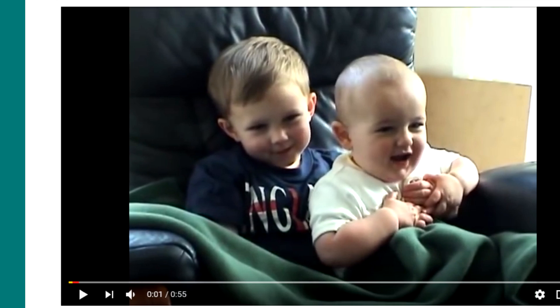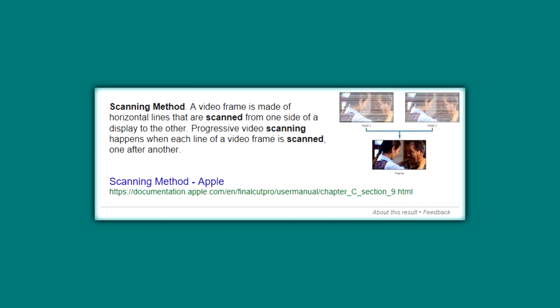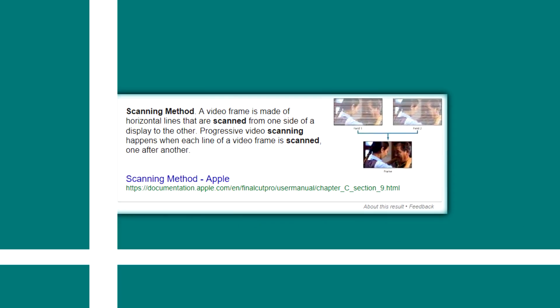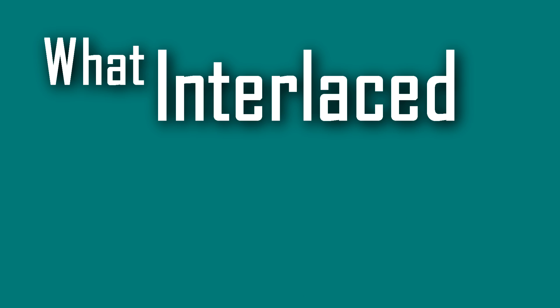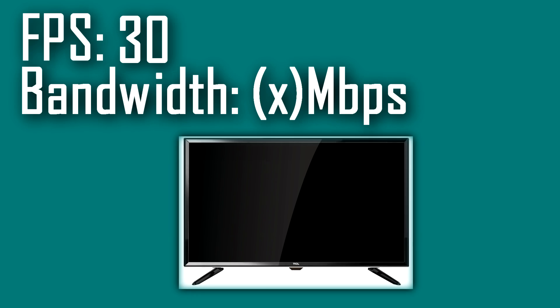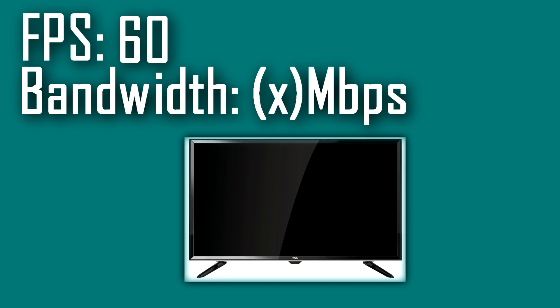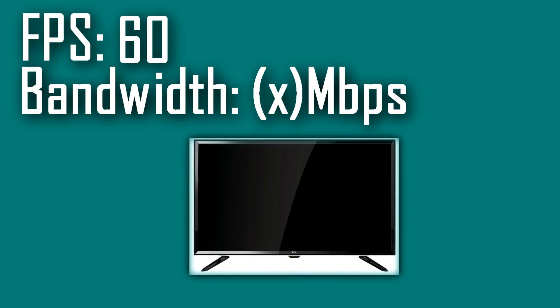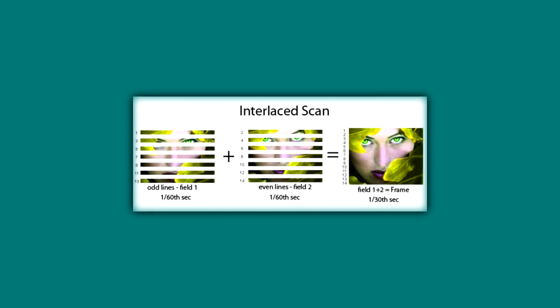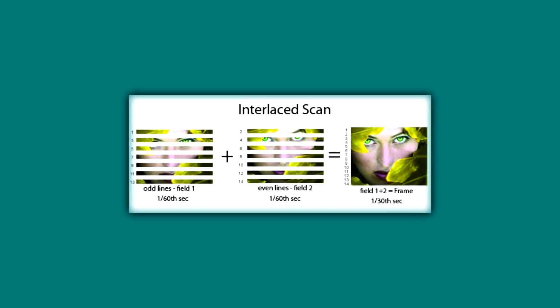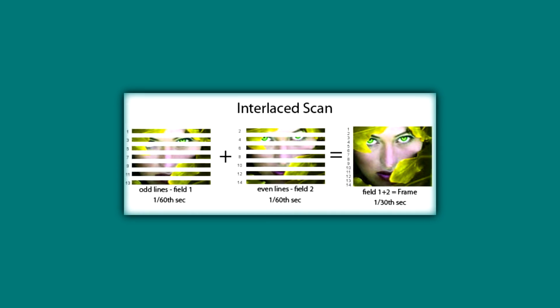Both refer to how the frames of a video are distributed, but both do it by different means — they are technically known as scanning methods. First of all, let's take a look into what interlaced is. It creates the illusion of having double the frame rate of a given display without actually hogging any extra bandwidth. This is achieved by displaying half of the given frame and then instantly afterwards displaying the other half for the same amount of time.